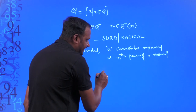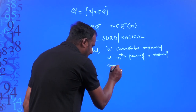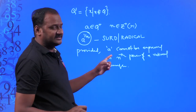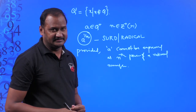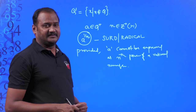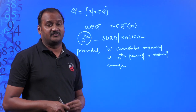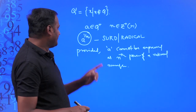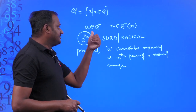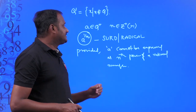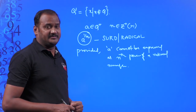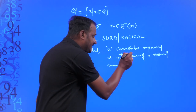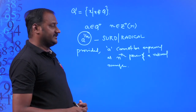Then a to the power of 1 by n is said to be a surd or a radical of order n. If you understand the definition, you can easily identify what kind of numbers are surds and what kind are not. Here a is any positive rational number, n is any positive integer greater than 1, and a cannot be expressed as the nth power of a rational number.